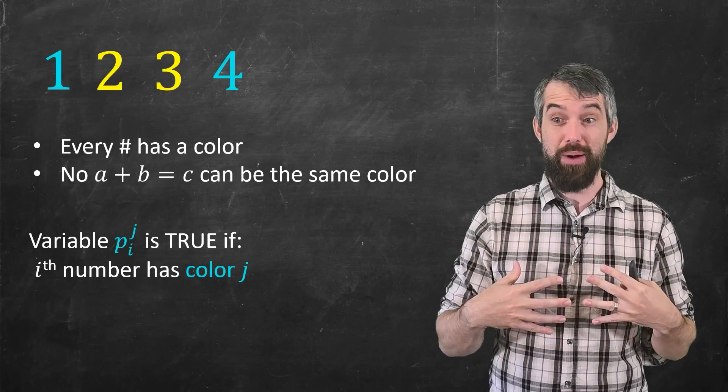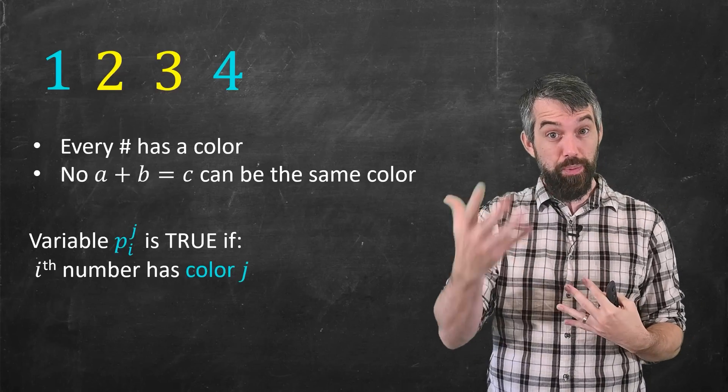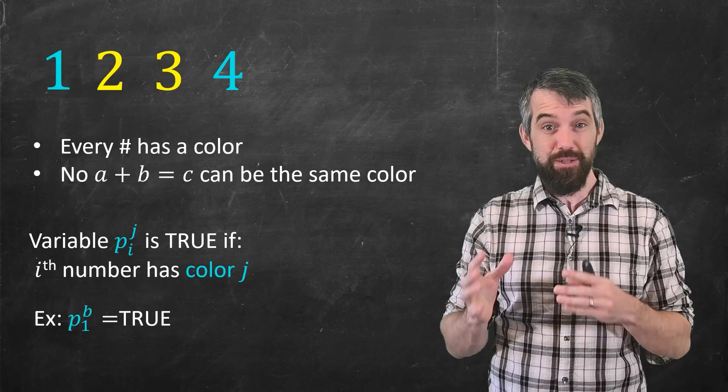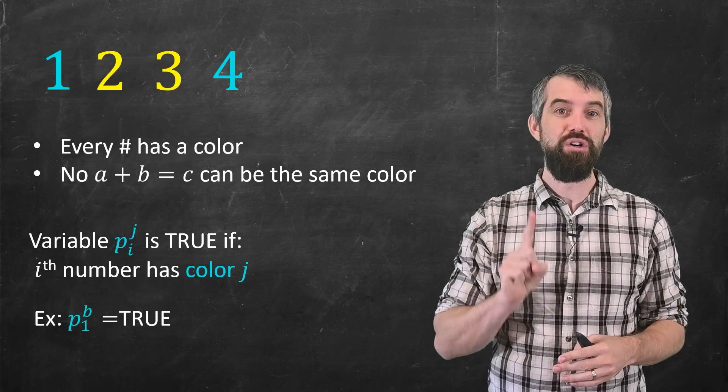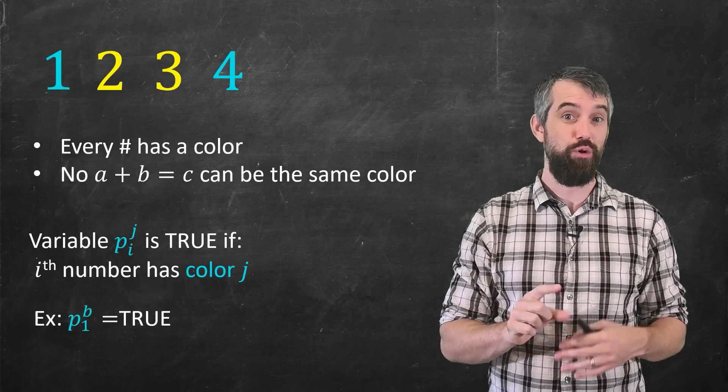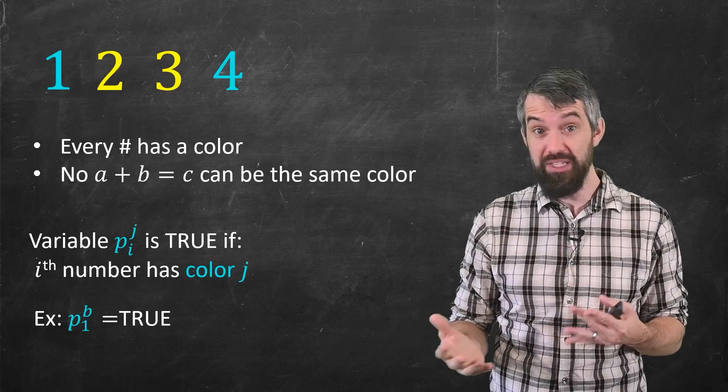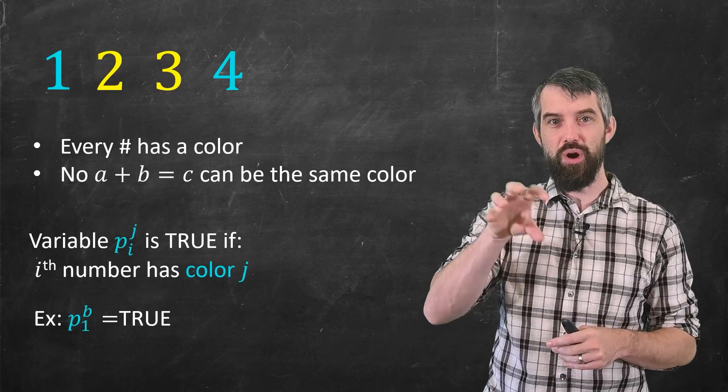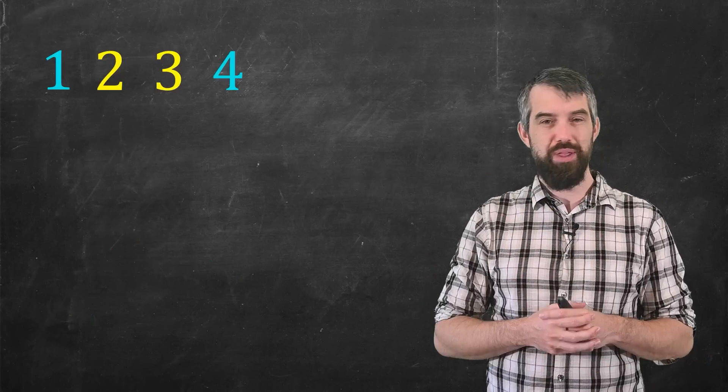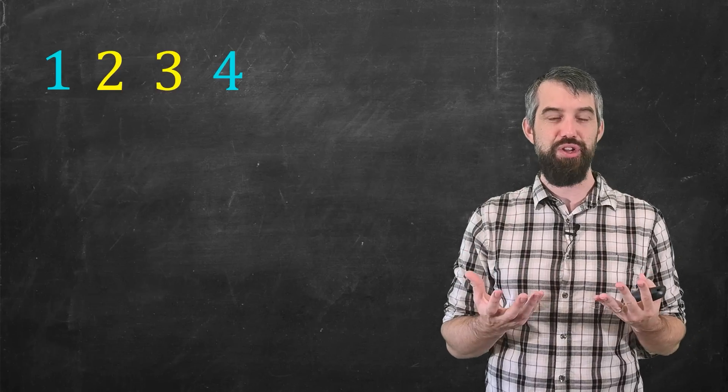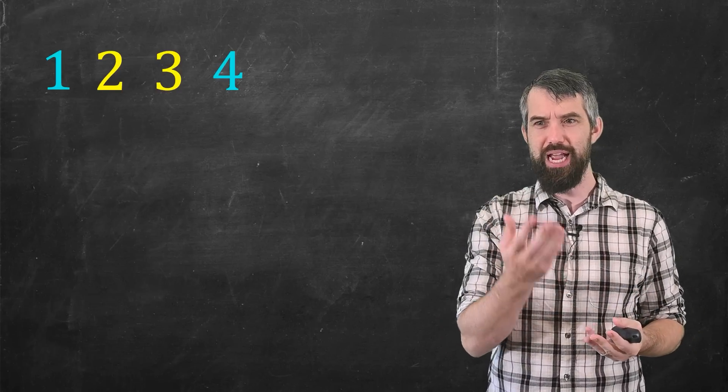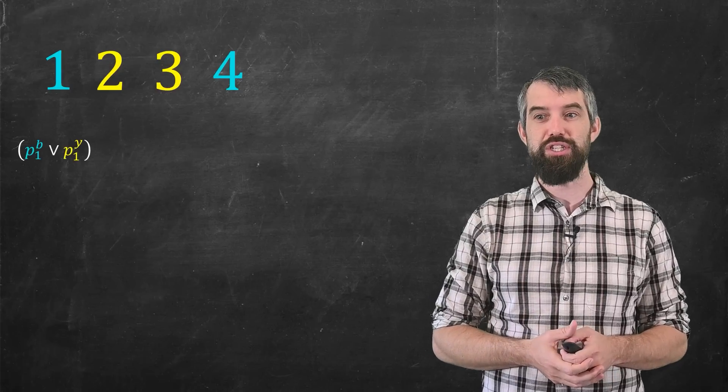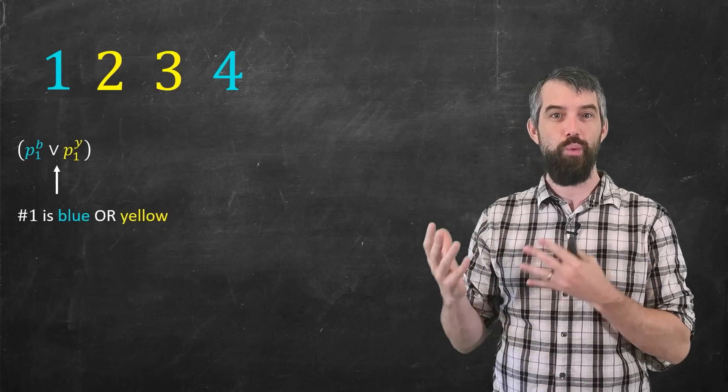So I'm going to call them p_ij. The subscript i is going to represent the ith number, and the superscript is going to refer to whatever the color is. So, for example, something like p_1^b, that's my shorthand for coloring the first number blue. So if p_1^b is true, that means the first number is indeed color blue, as it is in our example. So these variables are Boolean variables. They're either true or false. So at the most basic level, the first thing I have to do is say that the first color is either blue or yellow. And so using my fancy variables, the way I can do this is an expression like this. p_1^b or p_1^y.